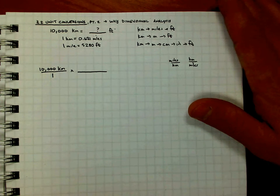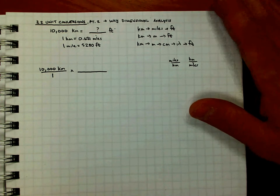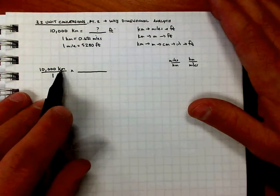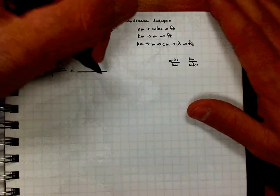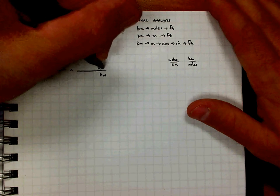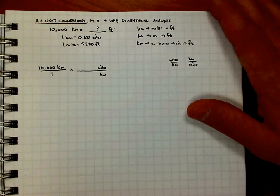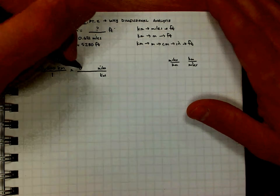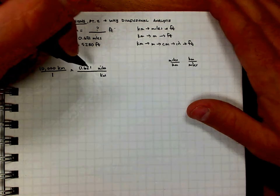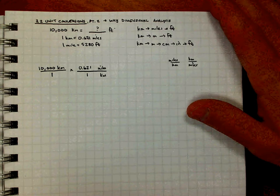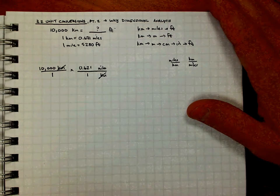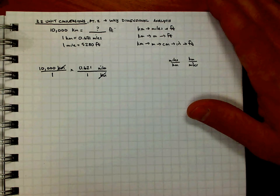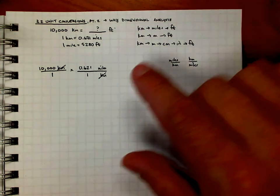And the way, just like in the last video, the way that I decide how to do this is if I have kilometers on the top here and I want it to go away, kilometers needs to go on the bottom of this fraction. What that's going to do is when I set up my conversion factor and put my numbers in, that would be 0.621 miles is equivalent to 1 kilometer. When I put that in, kilometers on top, kilometers on bottom, they go away. They factor each other out. I'm going to be left with the description. If I stopped right here, I'd be left with the description in miles.